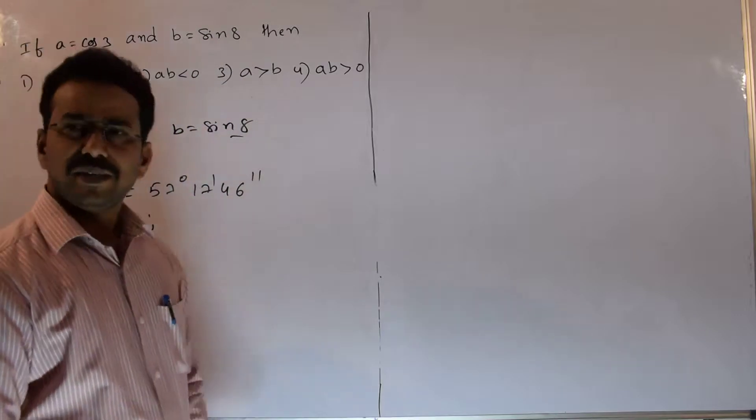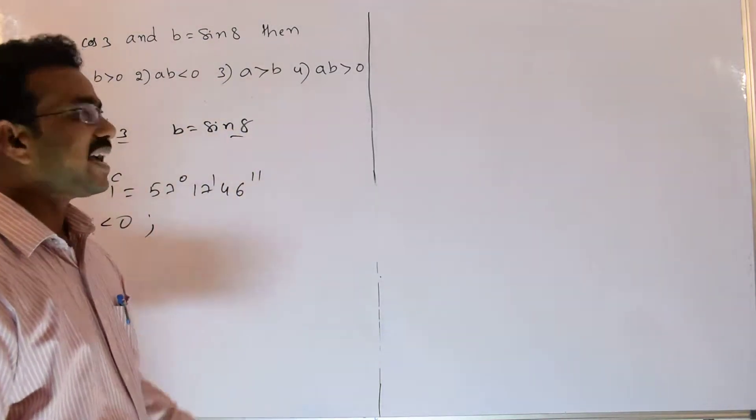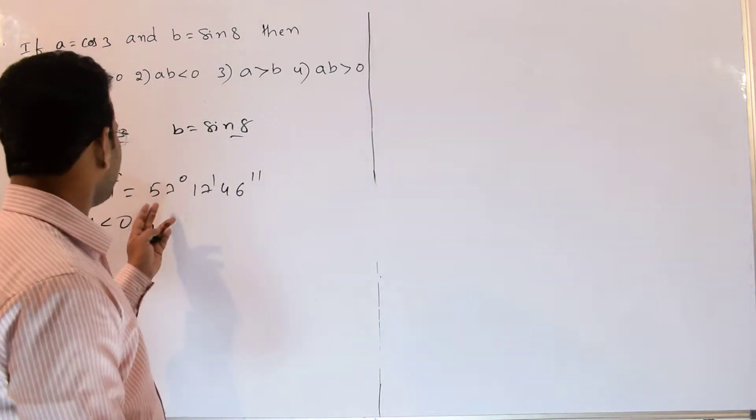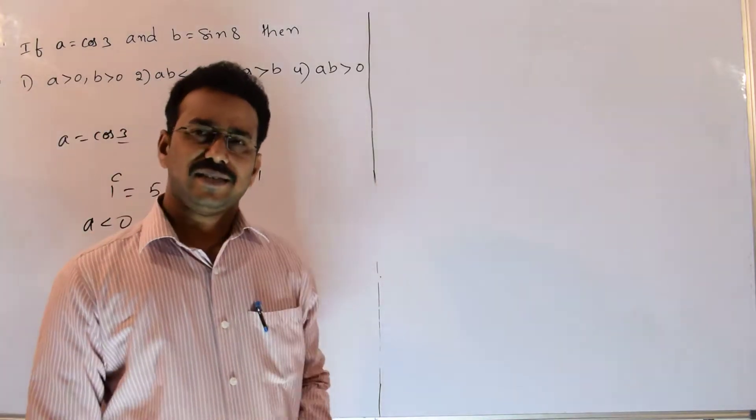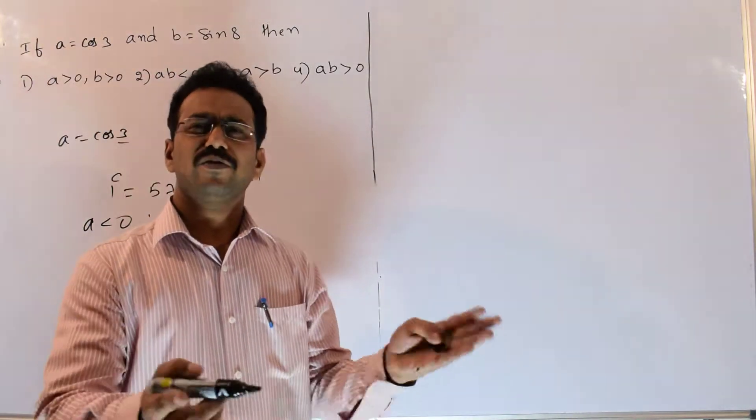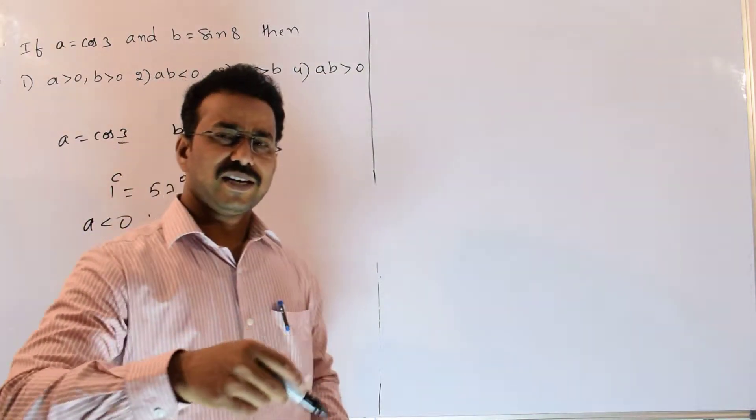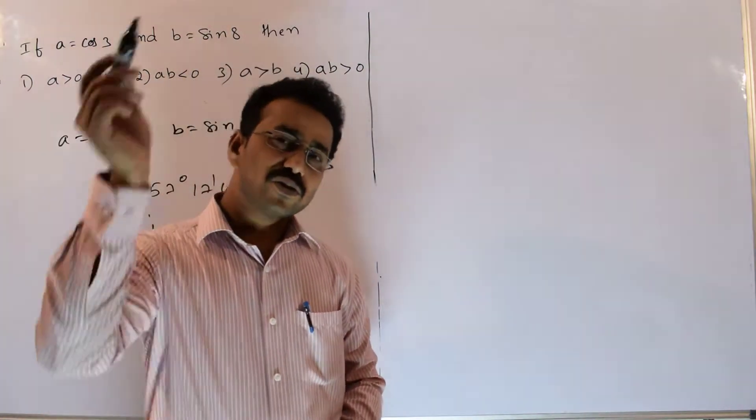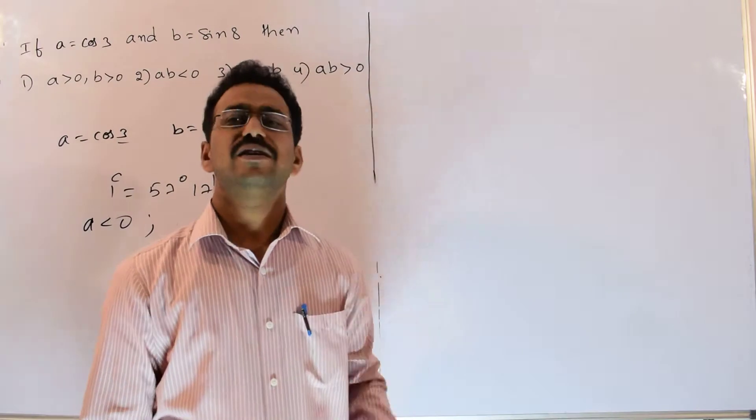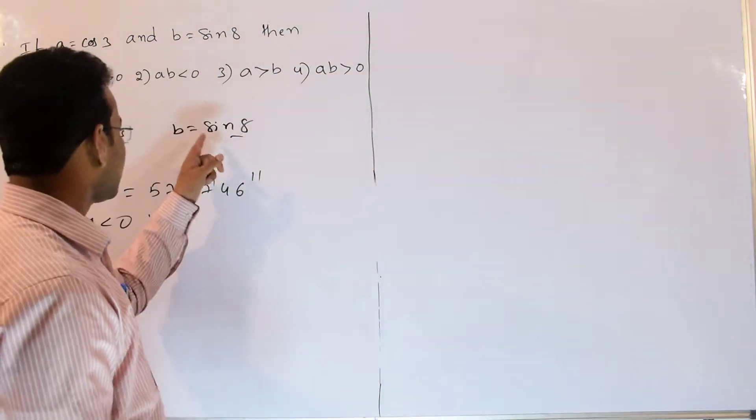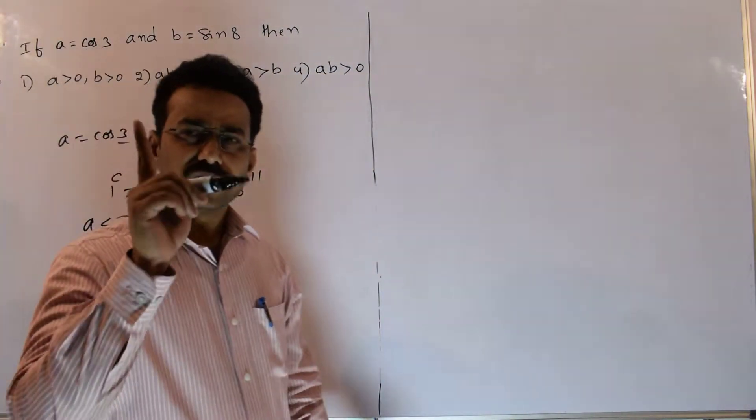Now we will think about this B. Here B equals to sin 8. 8 means 8 into 58, around 460 degrees, in between 458 to 460 degrees. 460 degrees means after rotating one revolution it goes to second quadrant. 460 belongs to second quadrant. In the second quadrant sine is positive.